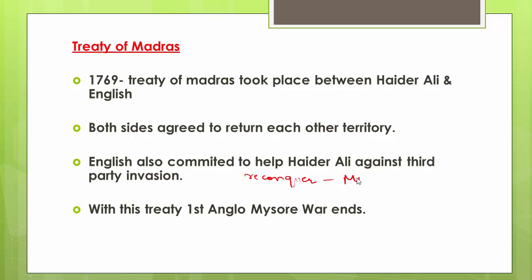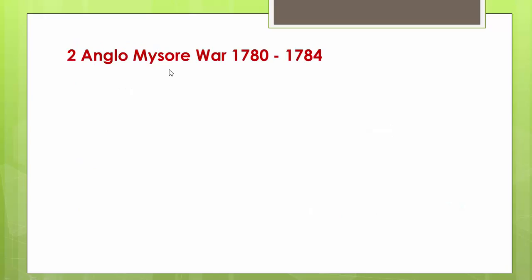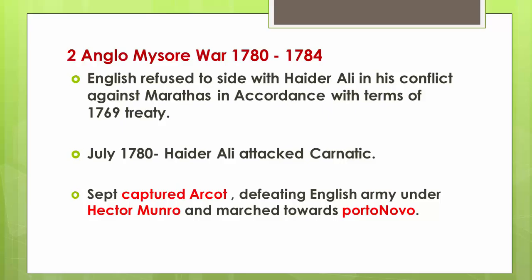According to the treaty, territories were returned. Haider Ali reconquered the Malabar region, and later in 1774 the region of Coorg also came under his possession. This ended the first Anglo-Mysore war, but it was not the end of all wars between Haider Ali and the English.